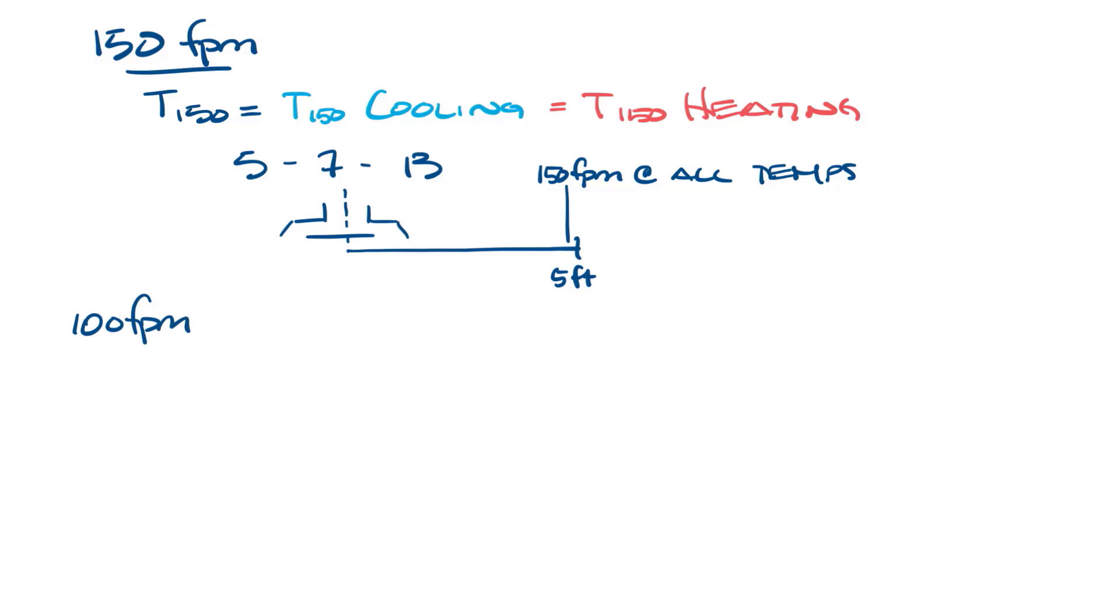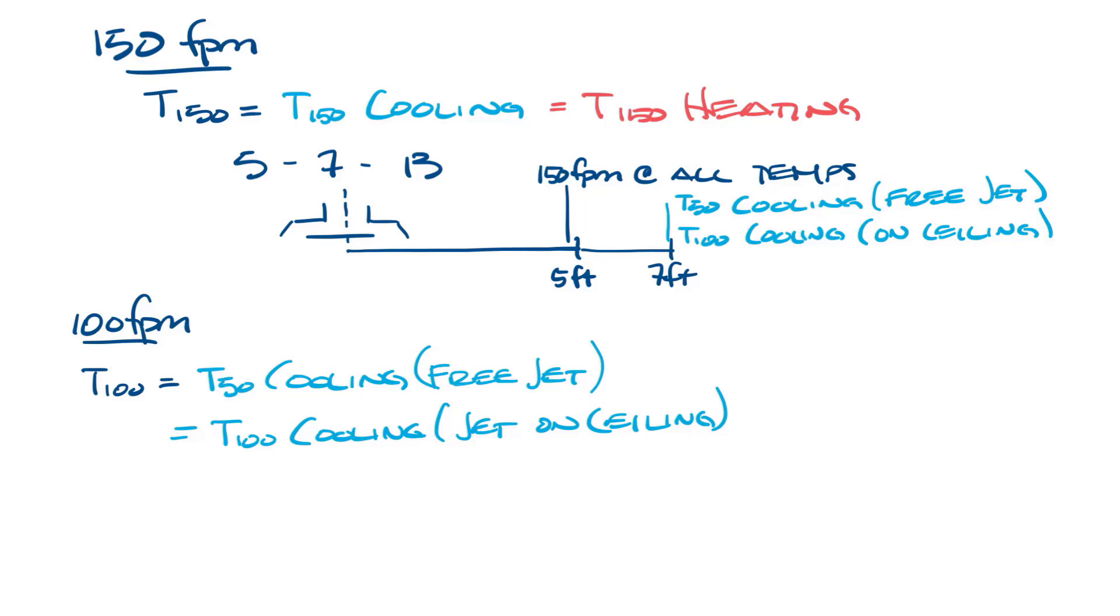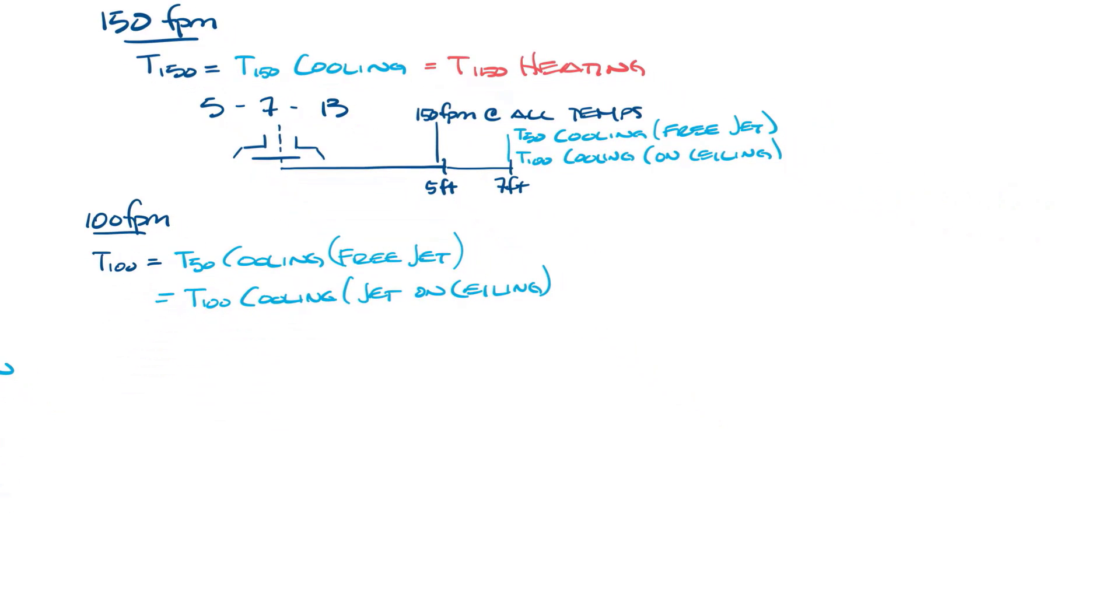So let's talk about T100. The 100 foot per minute catalog throw number is useful because in cooling, the 100 foot per minute isothermal throw is equal to 50 foot per minute cooling throw for free jet, or a 100 foot per minute cooling throw if it's moving along a wall. So let's draw this in up here, T50 for free jet or T100 in cooling if it's on the ceiling. Now let's move this over and look at why it matters if it's moving along a surface or not.